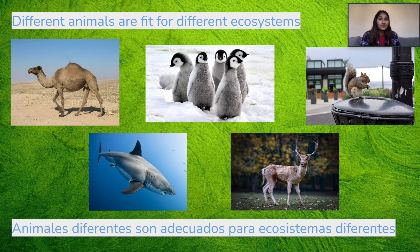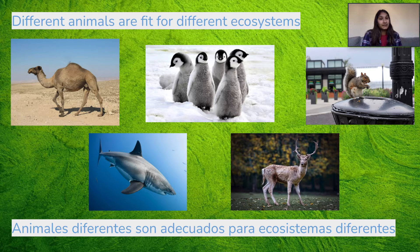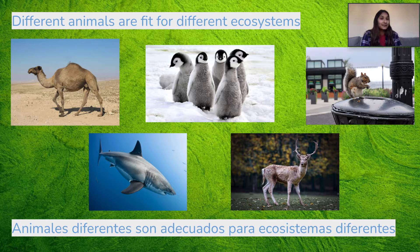There are also animals that live in the ecosystem maybe near your home. For example, there can be squirrels that run around, or maybe you've seen birds or even types of insects before.